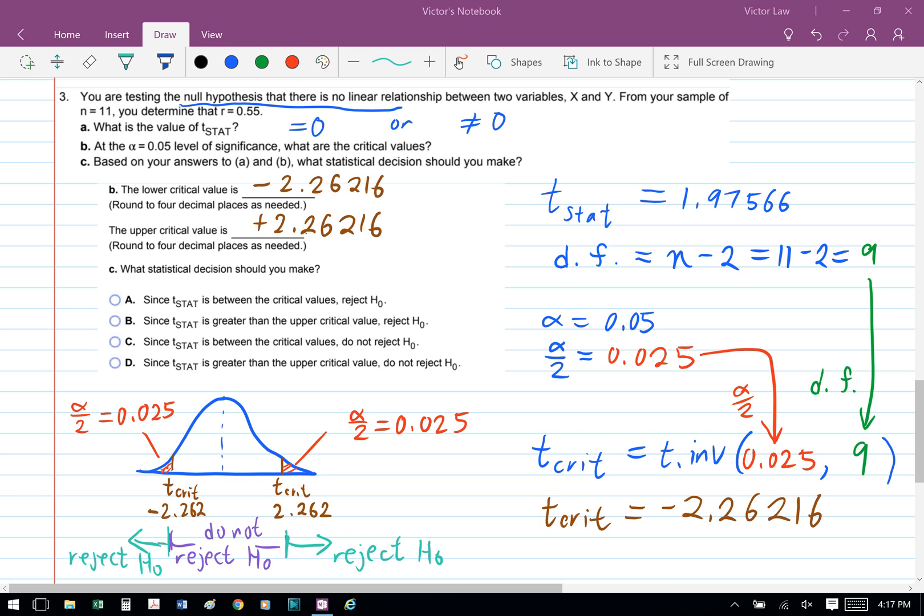And if it is to the right of positive 2.26, we reject H0. If it's to the left of negative 2.26, we also reject H0. And since the absolute value of the t statistic, which is 1.97, is less than the absolute value of t critical, which is 2.26, we do not reject H0.